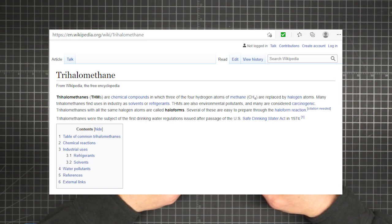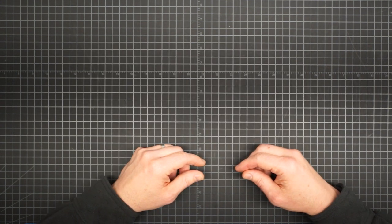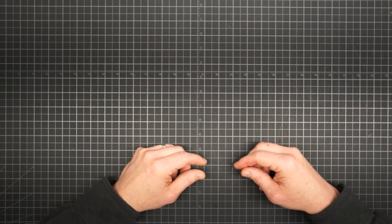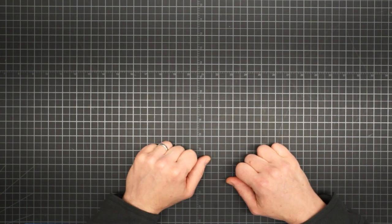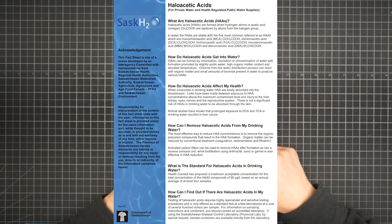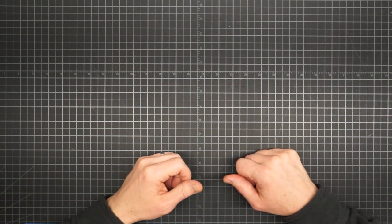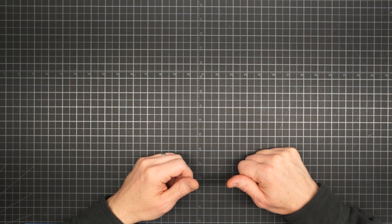One such group of byproducts are the trihalomethanes. Many are considered carcinogenic, and they were actually the subject of the first drinking water regulations issued under the US Safe Drinking Water Act. The other byproducts of potential concern are haloacetic acids. When consumed in drinking water, HAAs are easily absorbed into the bloodstream. They have been linked to injuries of the liver, kidney, eyes, nerves, and the reproductive system. And animal studies have shown that prolonged exposure in drinking water resulted in cancer.